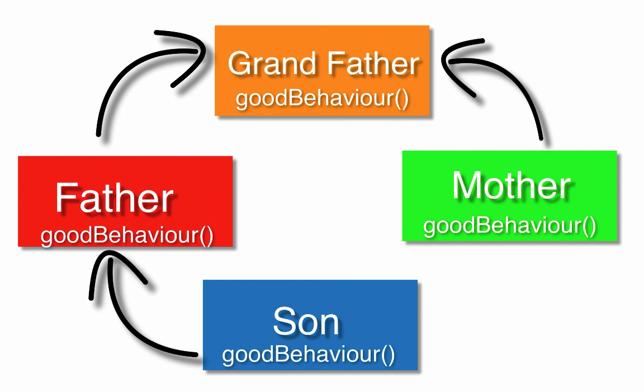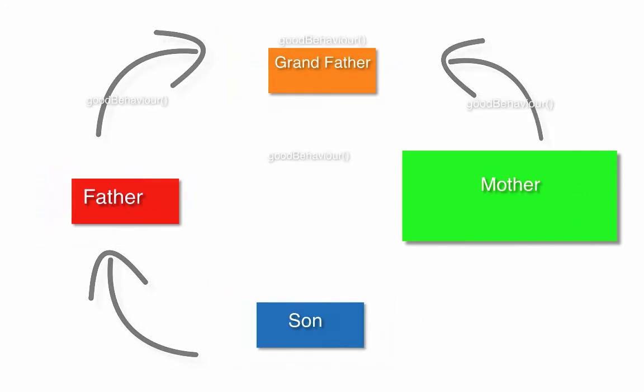To keep the language simple, Java removed multiple inheritance using classes. However, they allowed multiple inheritance to be achieved using interfaces. So if asked whether multiple inheritance is possible in Java: yes, it is possible using interfaces, but not using classes.